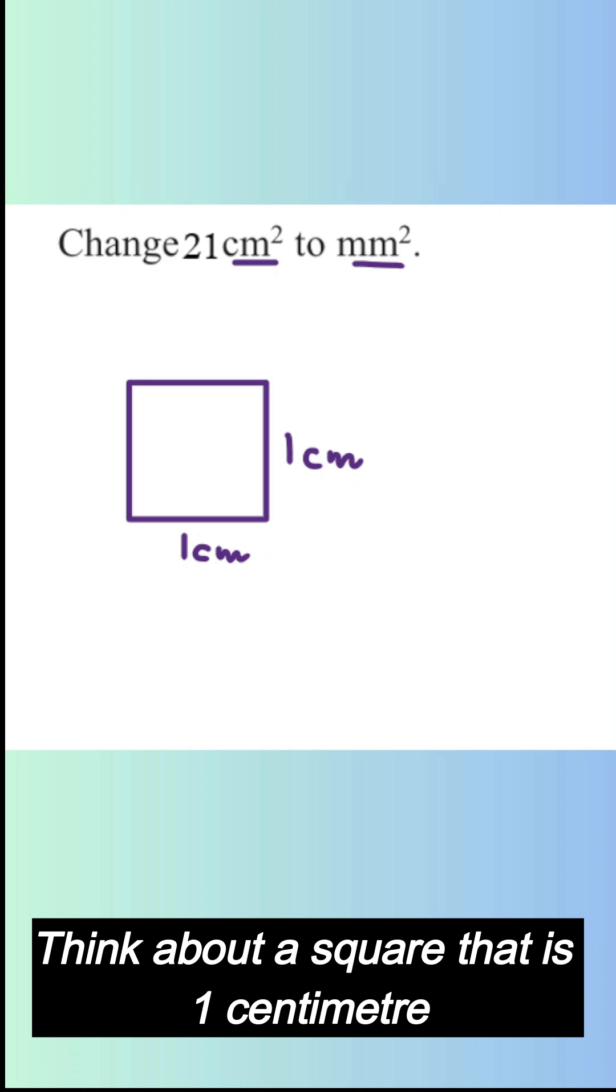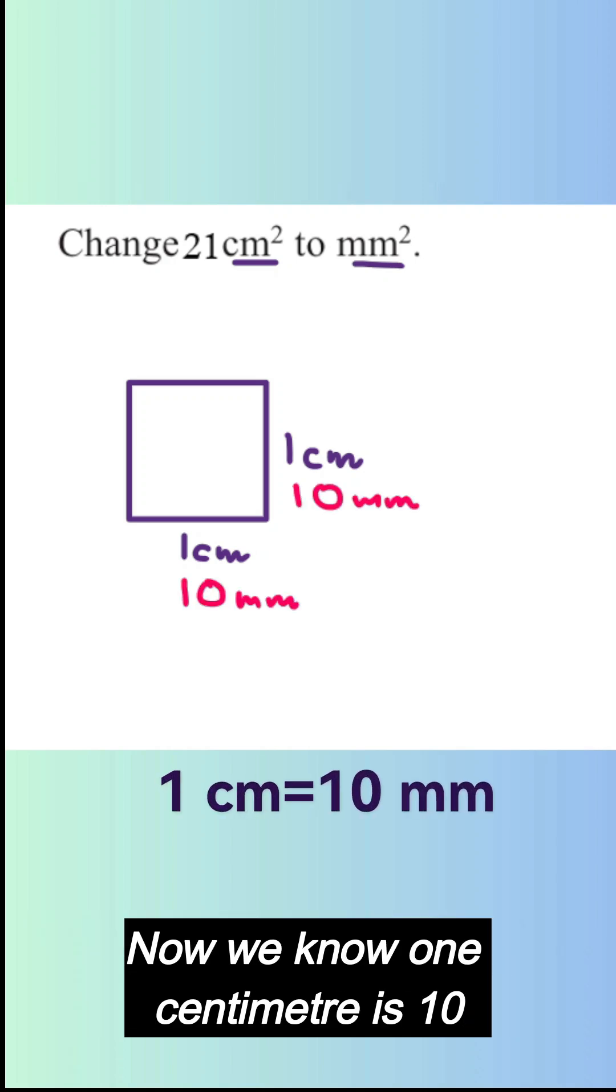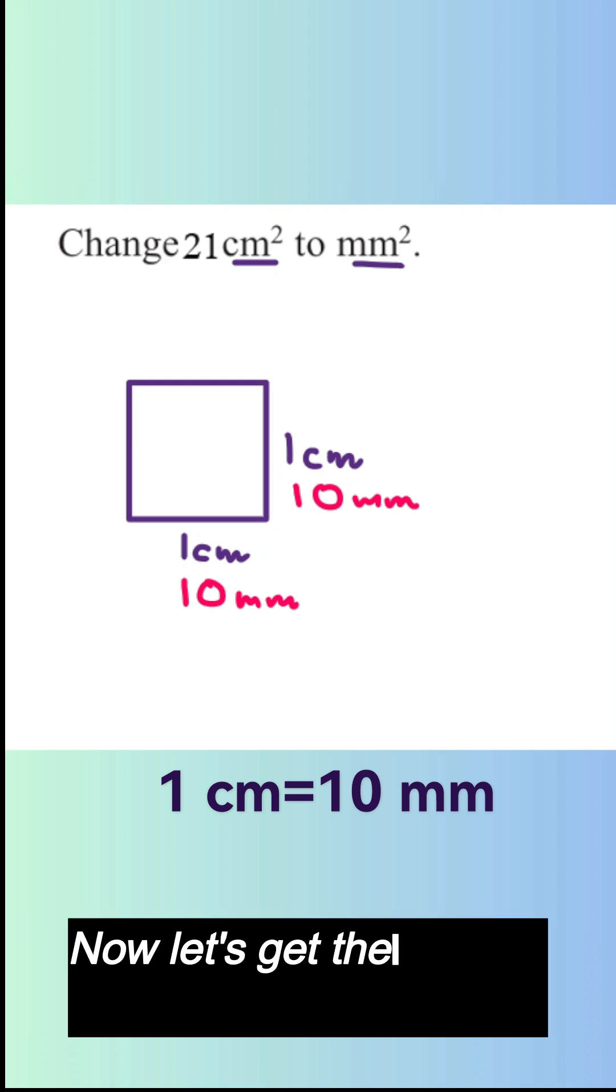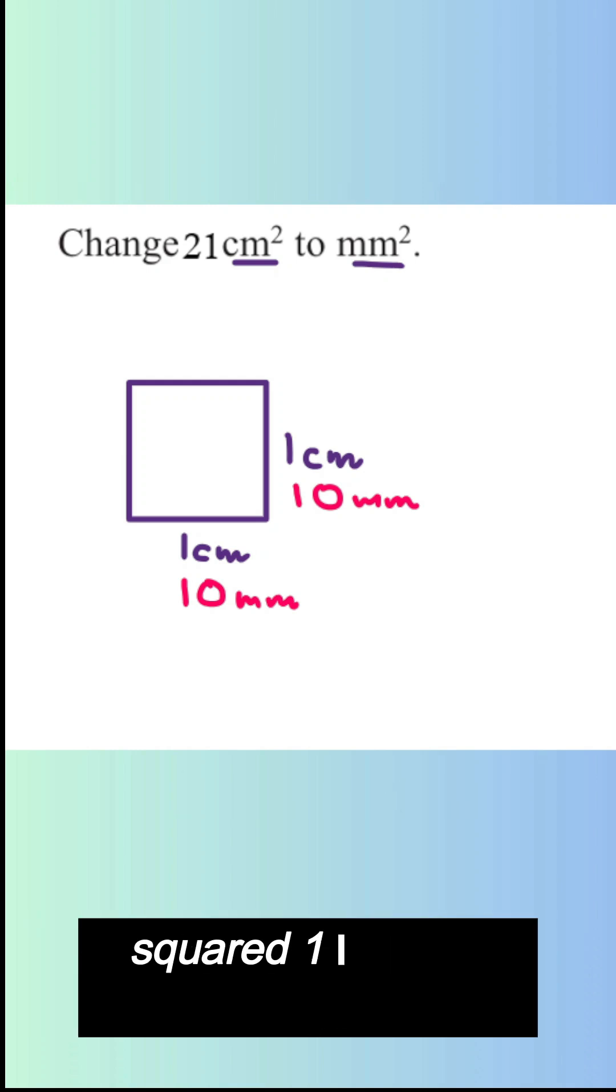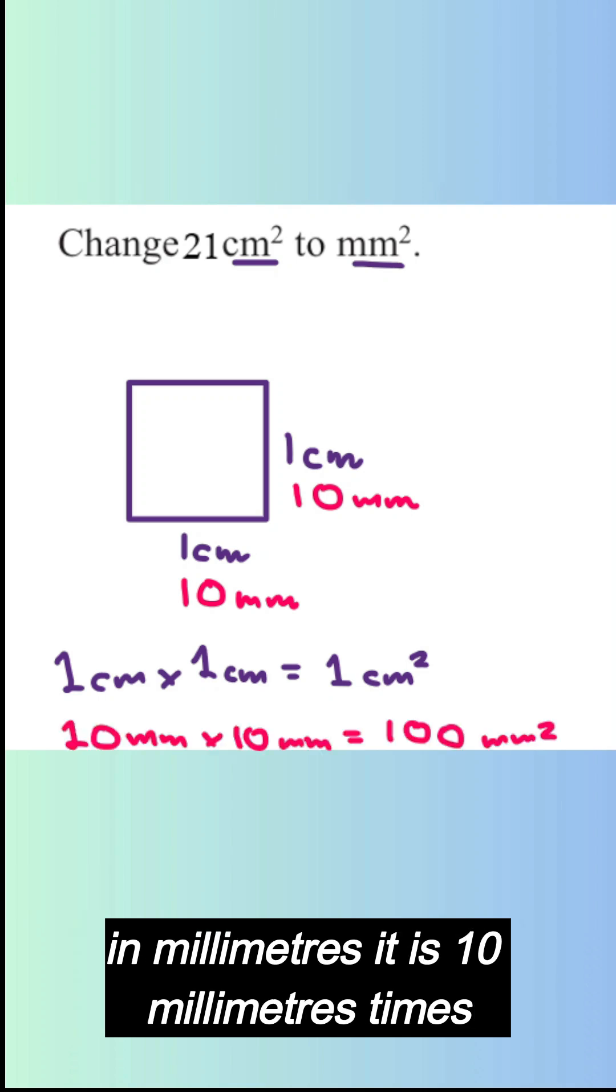Think about a square that is one centimeter long by one centimeter. Now we know one centimeter is 10 millimeters, so in millimeters it is 10 by 10.